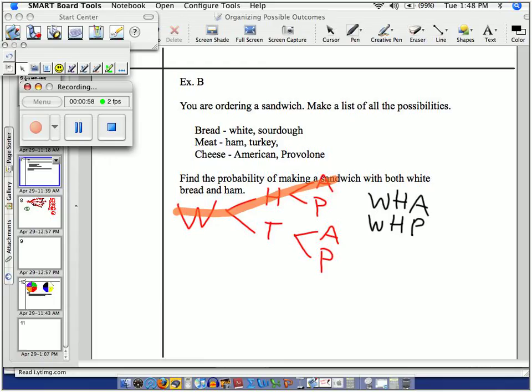White, turkey, American. White, turkey, provolone. These are all the sandwiches from the first order.